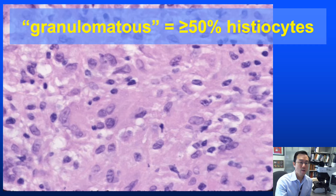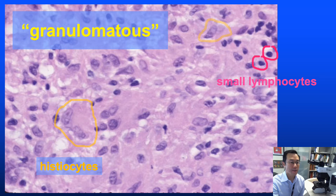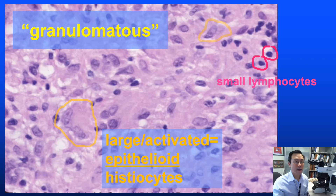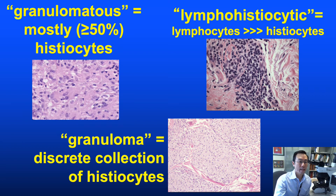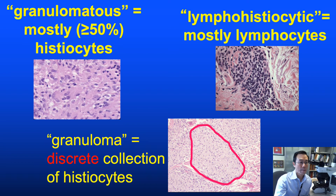In contrast to 'granuloma,' the term 'granulomatous' is slightly less strict — a discrete aggregate of histiocytes is not required. As a basic rule of thumb, an infiltrate containing 50% or more histiocytes may be characterized as granulomatous. The discrete granuloma is a subset of granulomatous inflammation, and typically more than one granuloma can be seen.